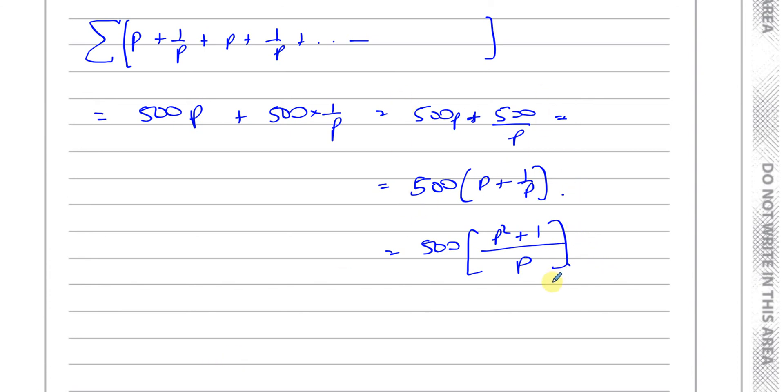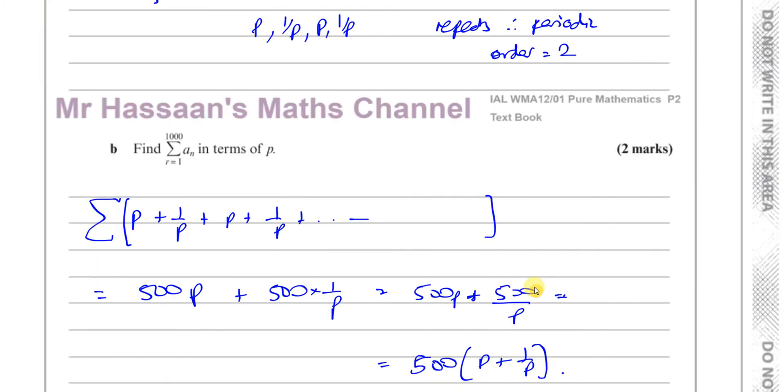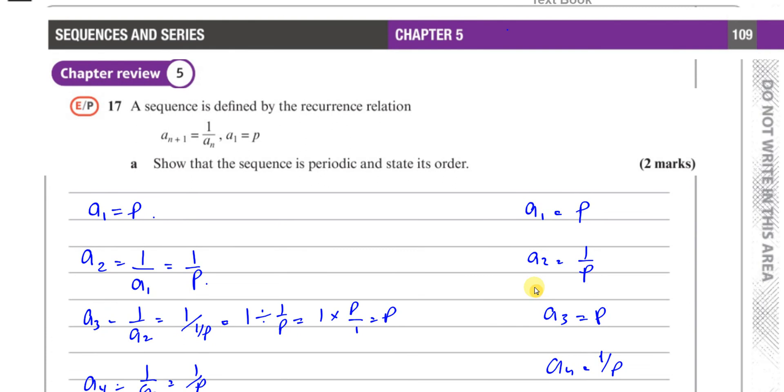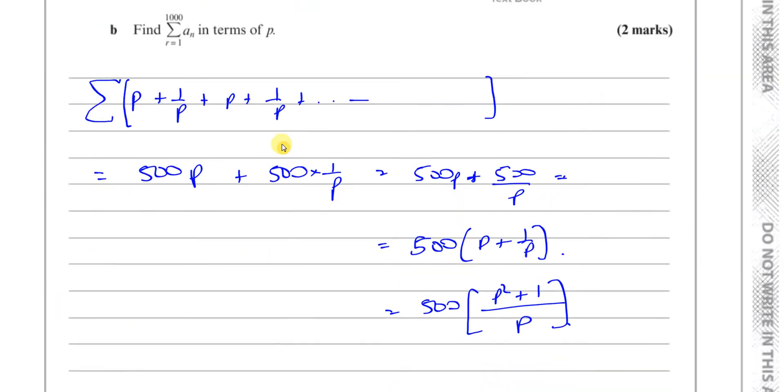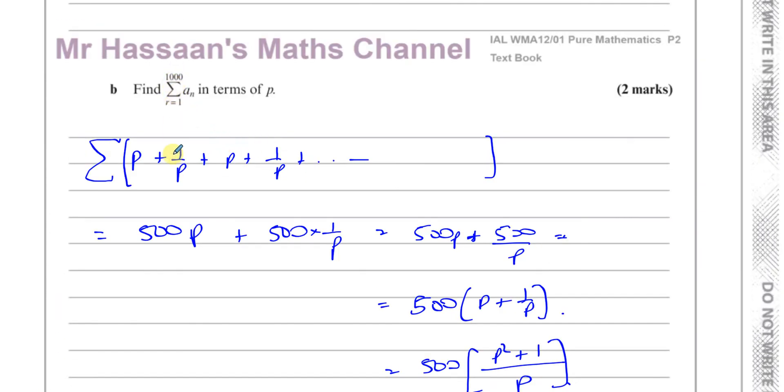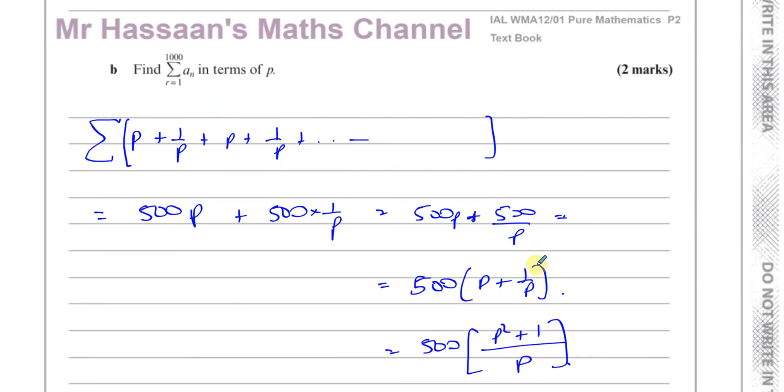So there you have the answer to that question. It's not that difficult. That's part A and part B, and that was the whole question. That's a nice short answer. It's a periodic sequence, order two. And the sum is, if there's the first thousand terms you want to add together, if there's a thousand terms and there's p's and 1/p's only, 500 of them will be p and 500 of them will be 1/p. So there's your sum of the first thousand terms. Thank you for watching and see you soon.